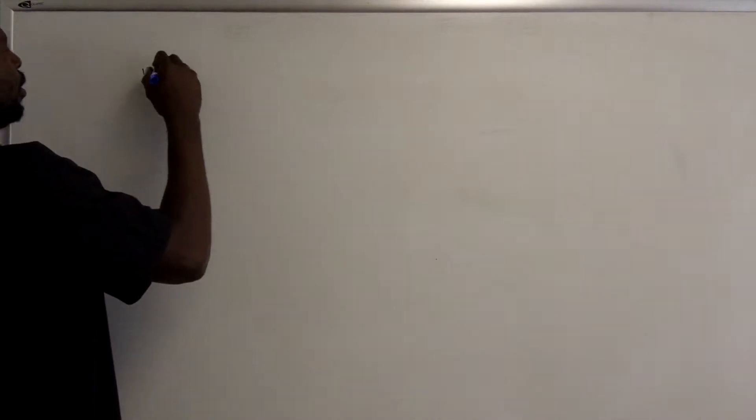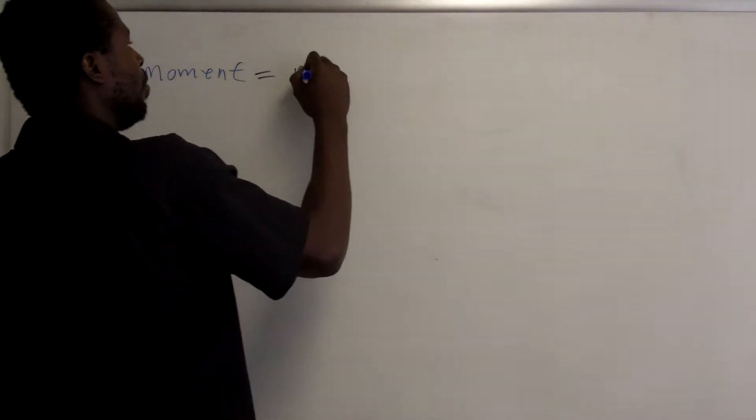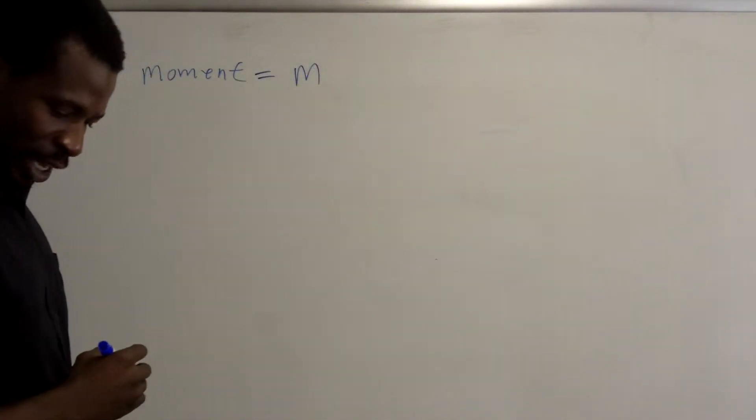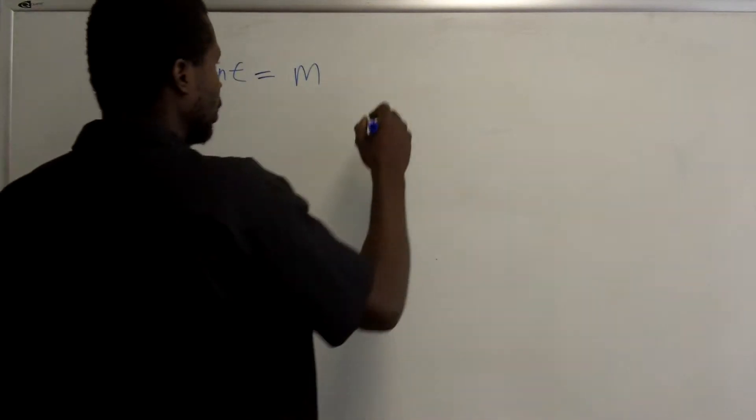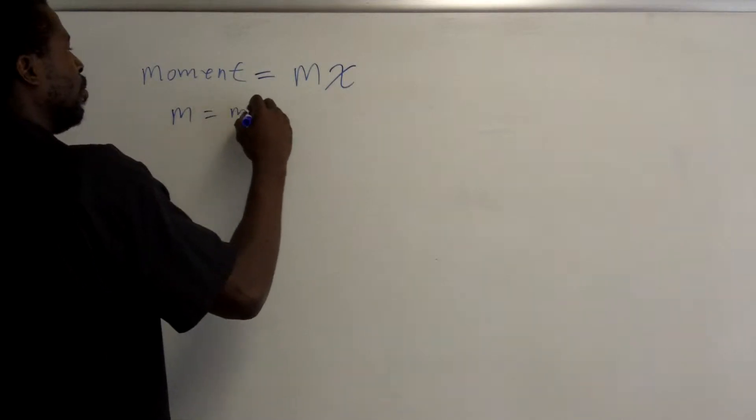We're going to discuss moments, centers of mass, and centroids. The first thing is to define what a moment is. The moment M about a point P is equal to M times X, where M is the mass of the object and X is the length of the moment arm.